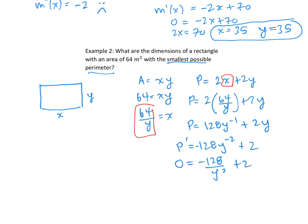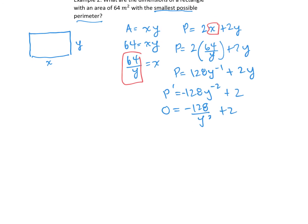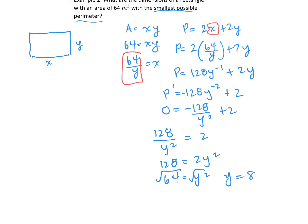Putting the 128 back to the denominator, bringing it to the positive side and cross-multiplying, then dividing both sides by 2 and taking the square root gives y equals 8. Going back to the area formula, x times y equals 64 with y equals 8, so x is also 8.